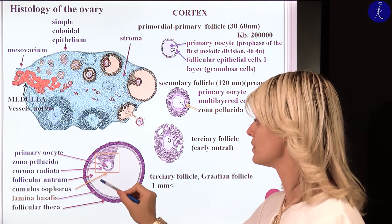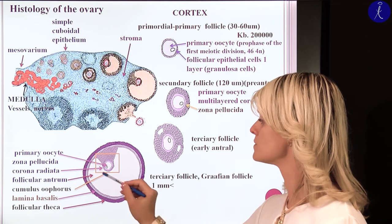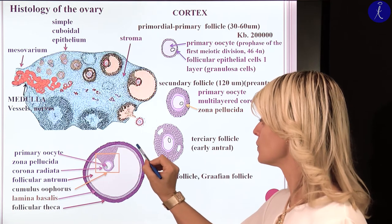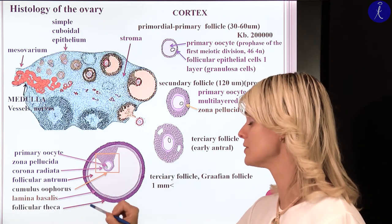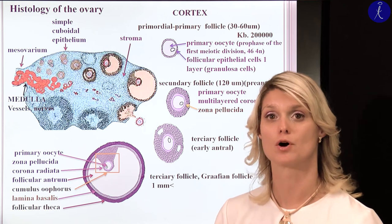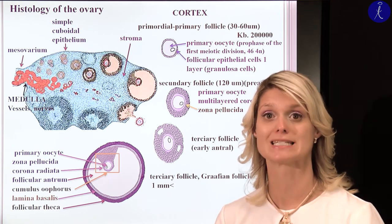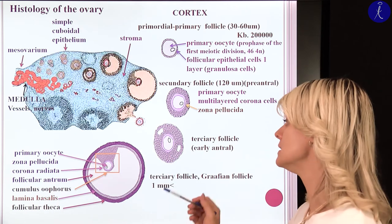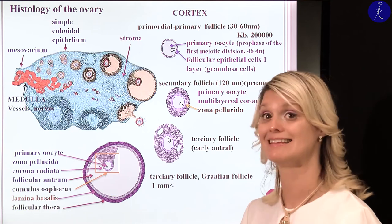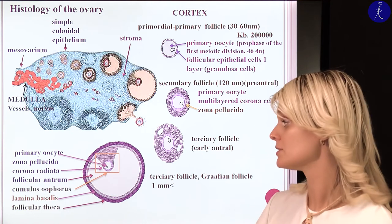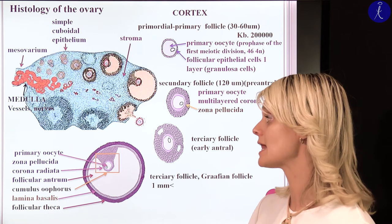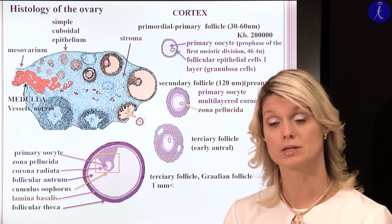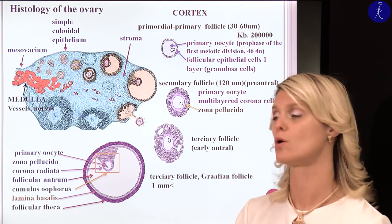We can find a very large follicular antrum surrounded by the granulosa cells. Additionally, there are one or two more layers which develop from the connective tissue — from the stroma, the cell-rich connective tissue between the follicles. These are the external and internal theca layers. The theca cells and the granulosa cells together will produce estrogen, which is the main female hormone.